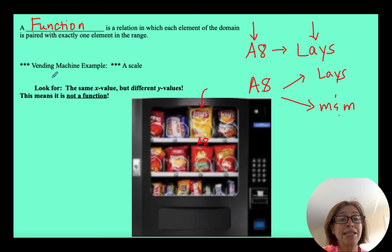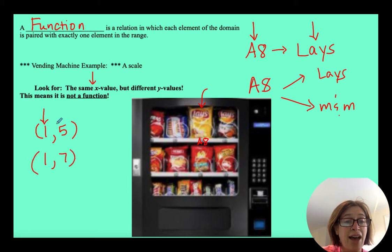So what I always tell kids to do is to look for the same x value but different y values. This means it's not a function. So the same x with different y's. That means something like this. If I give you one 5 and one 7, that's the same x value but I could get different outputs. Now, you can have repeated y values but you can't have repeated x values with different y's. So that's what makes something a function.